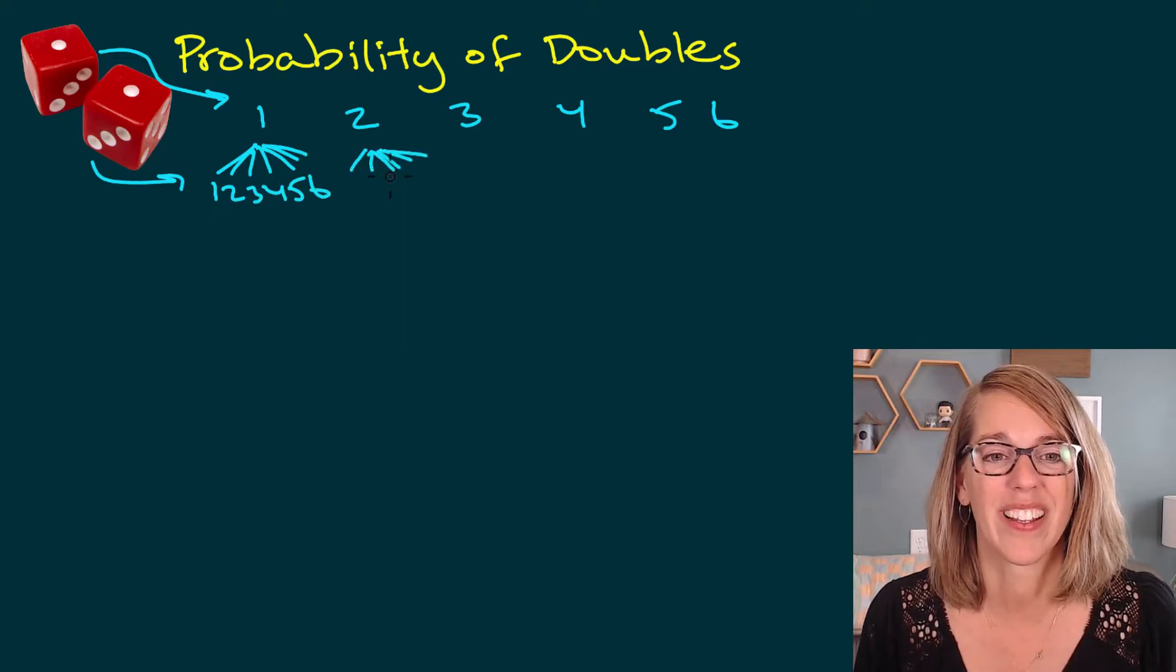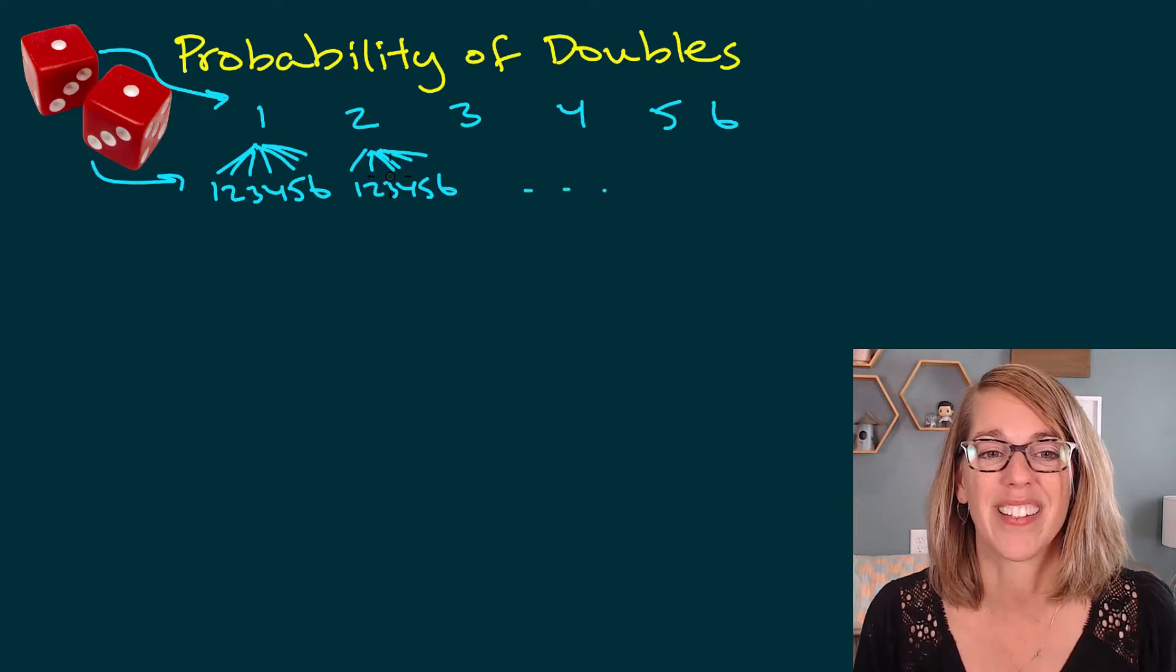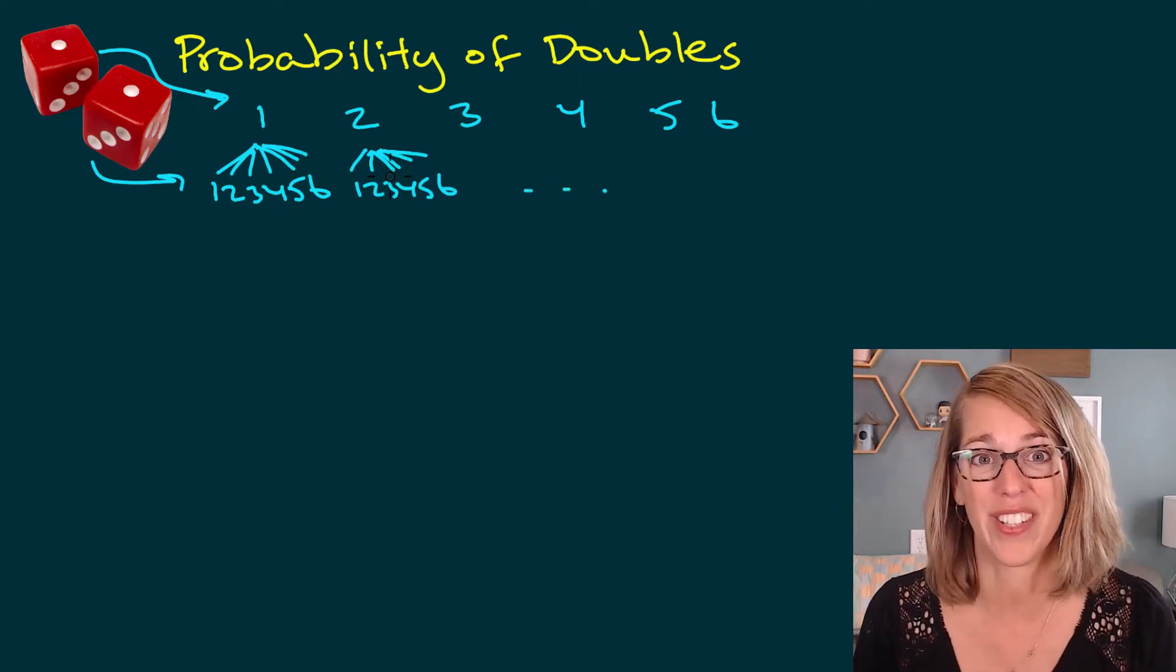Same with this one. One, two, three, four, five, six, dot, dot, dot. There's a bunch of pairs that live in this.